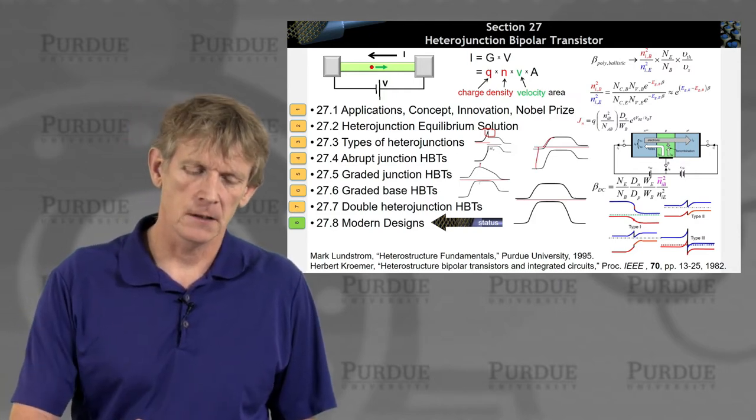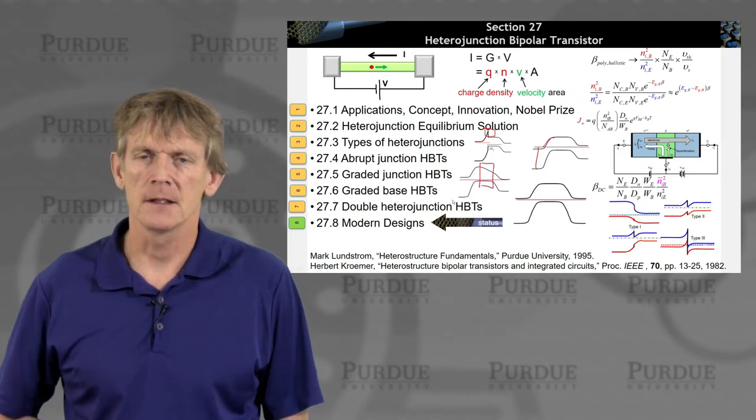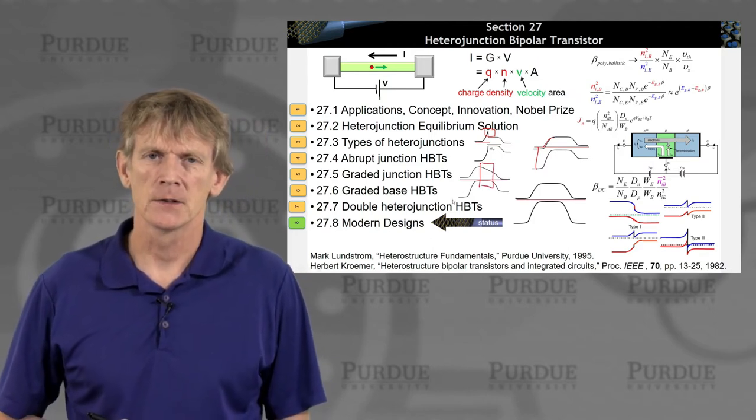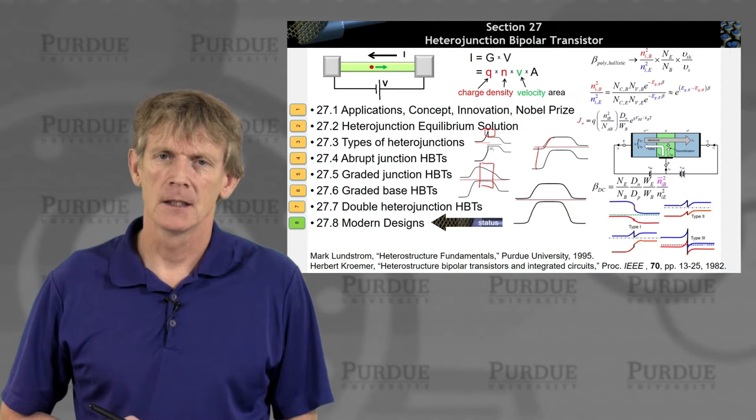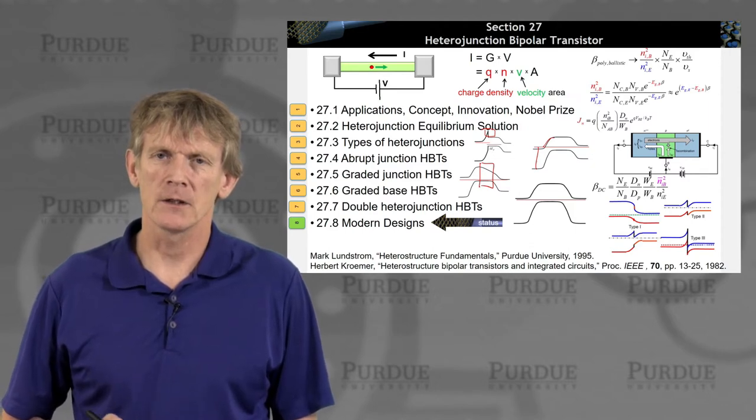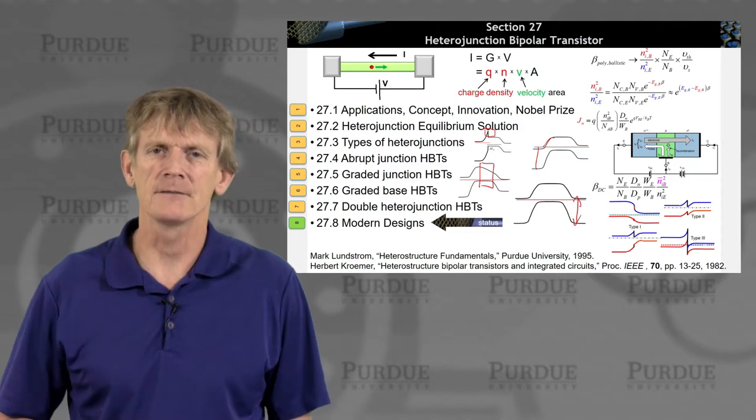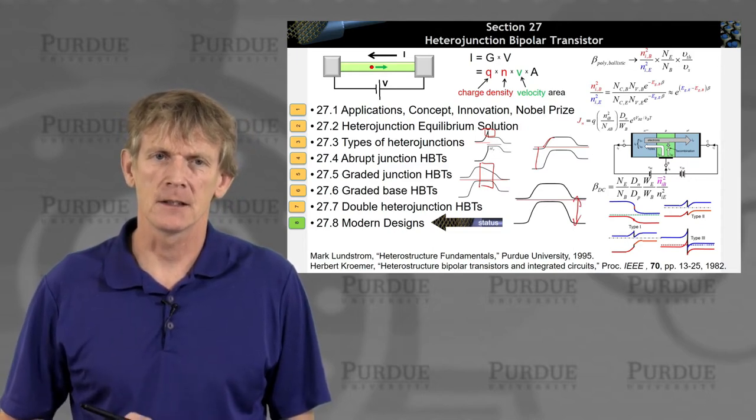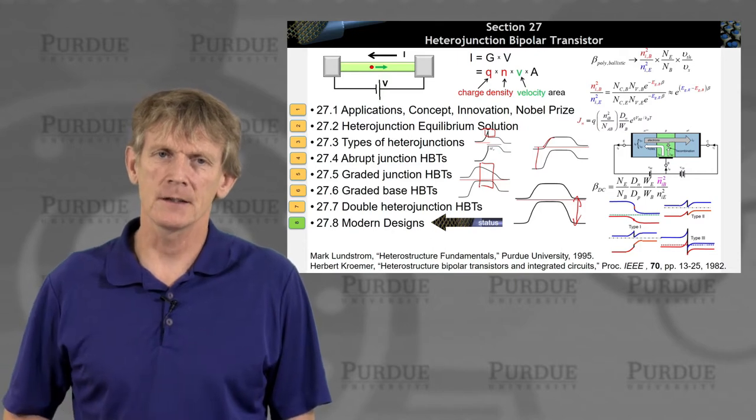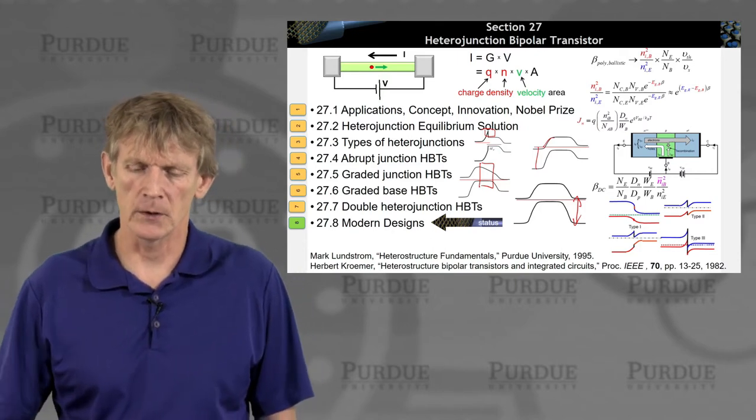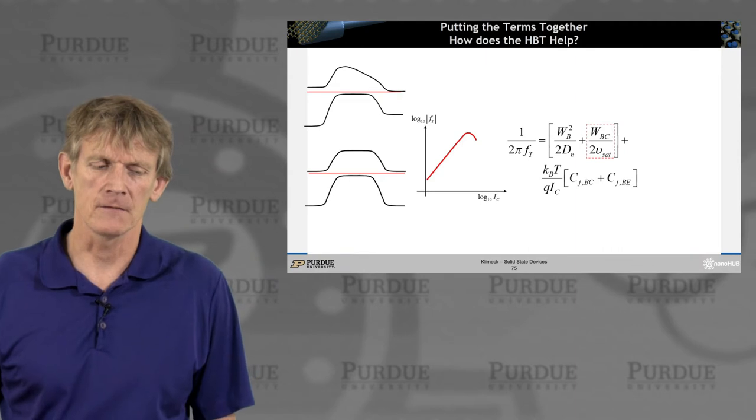Then we learned how to grade the junction and eliminate the spike and increase the barrier. Then we built in a ramp in the base, so we had a graded base. And ultimately, we also expressed interest and justified why you might want to have a larger band gap in the collector as well. So let's put this all together and see how it sums up and what we try to achieve.